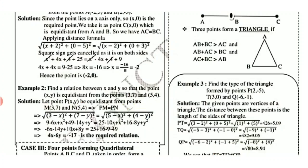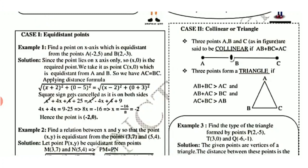Case 2: Collinear points or triangle. Three points A, B and C are collinear if AB plus BC equals AC. Three points form a triangle if the sum of any two sides is greater than the third side: AB + BC > AC, or AB + AC > BC, or AC + BC > AB.